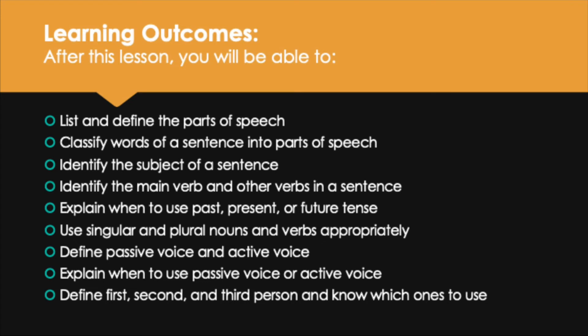As we wrap up this lesson, we've covered a lot of material. The learning outcomes for this lesson were: to list and define the parts of speech; classify words of a sentence into parts of speech; identify the subject and main verb of a sentence; explain when to use past, present, and future tense; use singular and plural nouns and verbs appropriately; define passive and active voice and explain when to use them; and define first, second, and third person and know which ones to use.